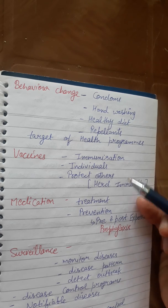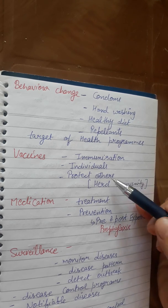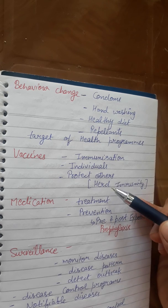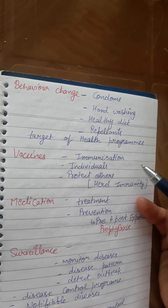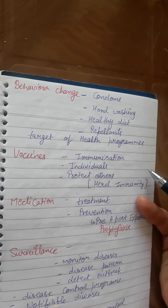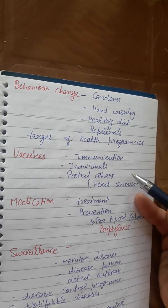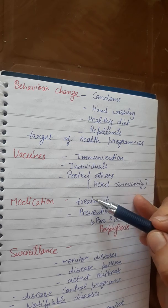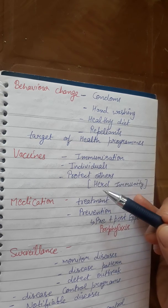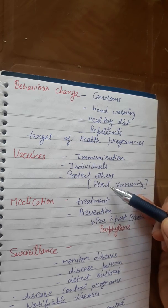If we give OPV — oral polio vaccine — it can prevent the disease in others, including other children. This creates immunity in the community, and that is herd immunity.